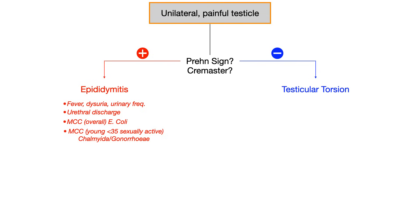Now let's look at the testicular torsion side. If the Prehn's sign and the cremaster reflex were both negative, we're dealing with testicular torsion. Other things to look for are nausea and vomiting and a high-riding testicle. And look for a painless scrotal mass.